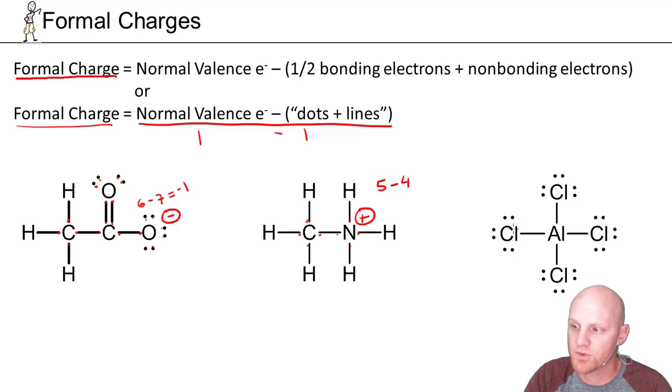Finally moving on to this last structure. If we start with the chlorines on the outside here. Chlorine's normal number of valence electrons is seven, and every single one of these chlorines is exactly equivalent in how they're represented. They all have three lone pairs and one bond. So seven minus one line and one, two, three, four, five, six dots. Seven minus seven comes out to zero, no formal charge on any of the chlorines.